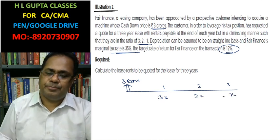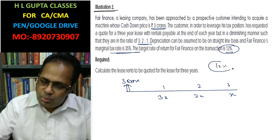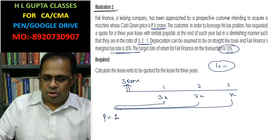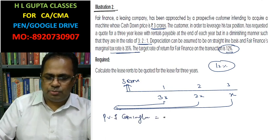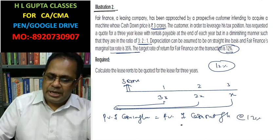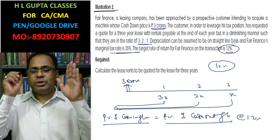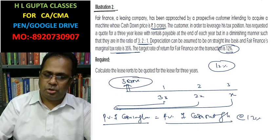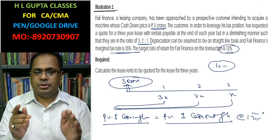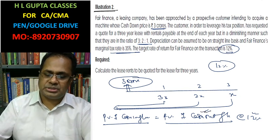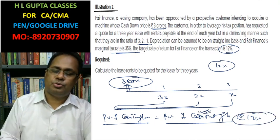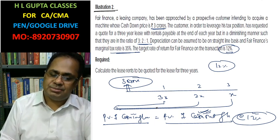The desired return is 12%, which means the present value of lease rent net of tax — that is, the present value of cash inflow — must be equal to the present value of cash outflow at the rate of 12%. If this happens, the investor will recover the initial investment of 3 crore as well as the desired return of 12%. Present value means: present value of inflow equals present value of outflow, recovering initial investment plus desired 12% return.